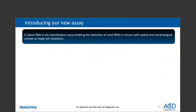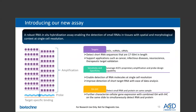To address customers' needs, we're delighted to share that ACD has developed a new RNA in situ hybridization assay to allow for the detection of small RNAs with spatial and morphological information at single-cell resolution. This new assay will enable the detection of short RNA sequences, including ASOs, microRNAs, siRNAs, or any short RNA sequences that are 17 to 50 nucleotides in length.